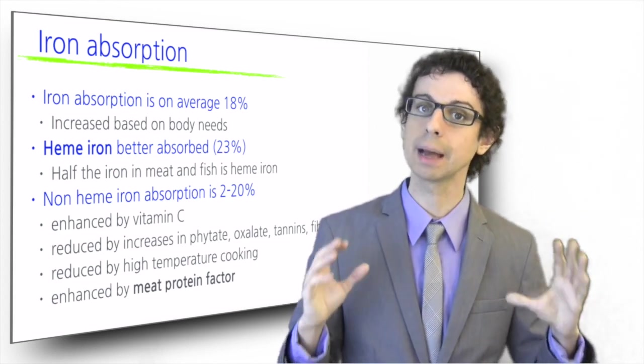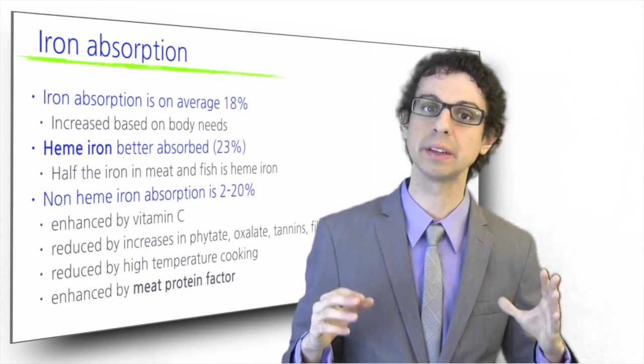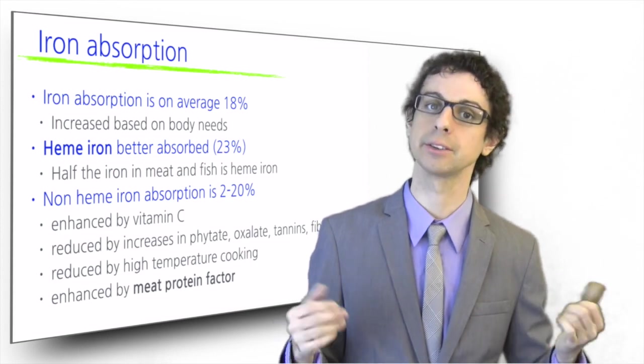Eating raw liver with lemon juice was an ancient remedy for anemia and now you can understand why.